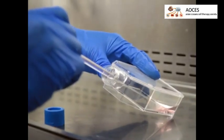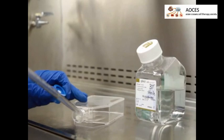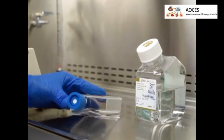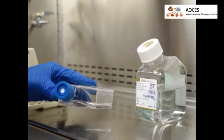Gently aspirate the culture medium and then wash the cells twice with PBS. The magnetically labeled cells can now be used for experiments.